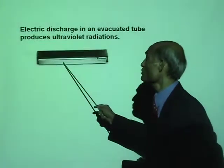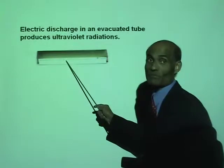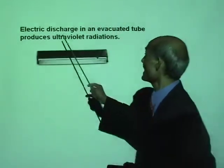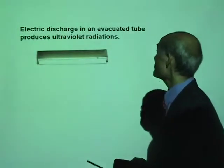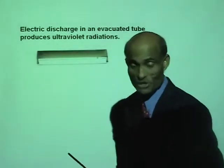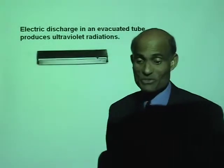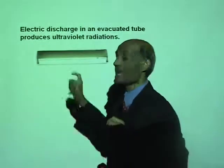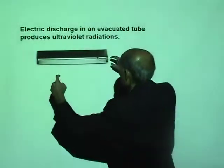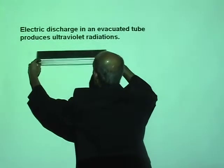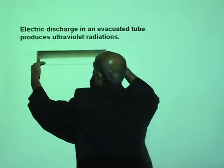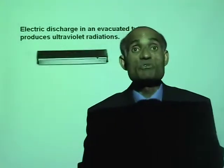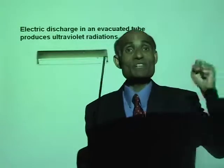And all of us know what this is — we all have this at home and in the offices. So electric discharge in an evacuated tube produces ultraviolet radiations. You see the fluorescent lamps we have all over here. This is a fluorescent lamp. What happens is, there is a positive part and a negative part. When electric discharge takes place inside, what is produced are ultraviolet radiations.